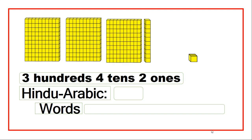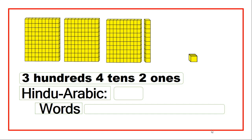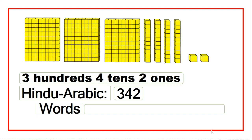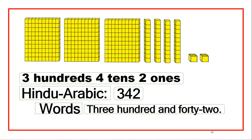In this part, I have three blocks of one hundred, then I have four blocks of tens, and two blocks of ones. So I have three hundreds, four tens, and two ones. So in Hindu Arabic, I will write three, four, two. And in words, I will write three hundred and forty-two.